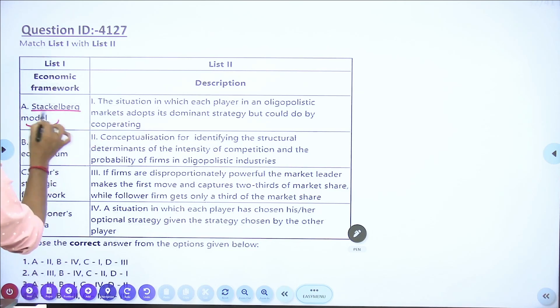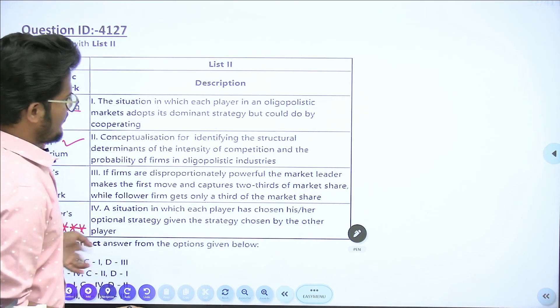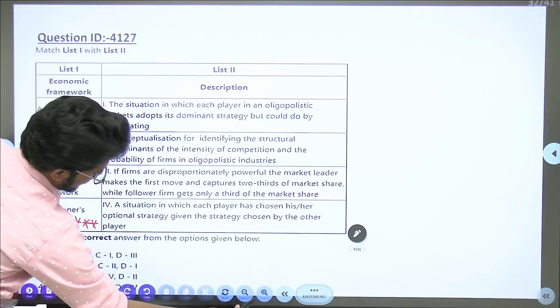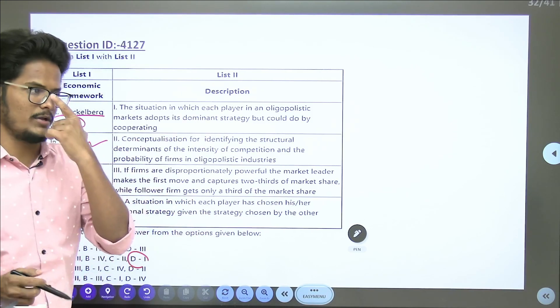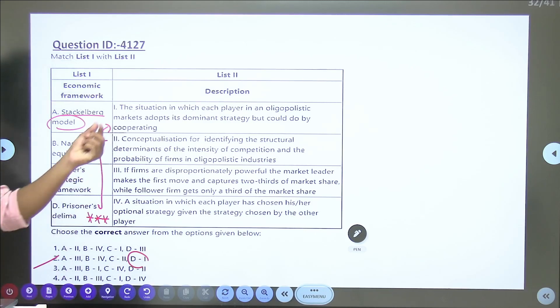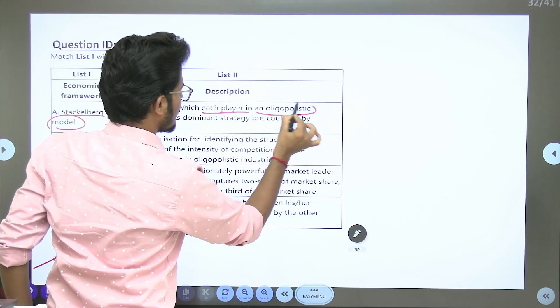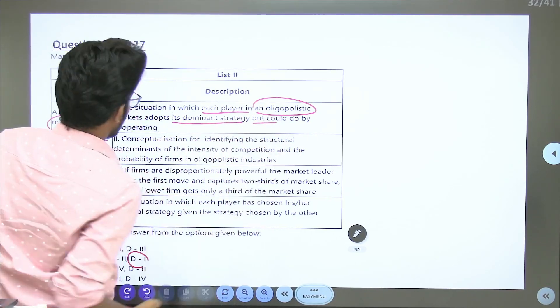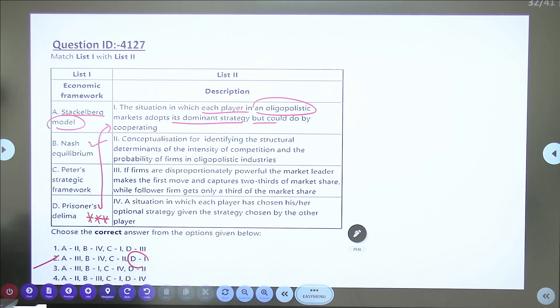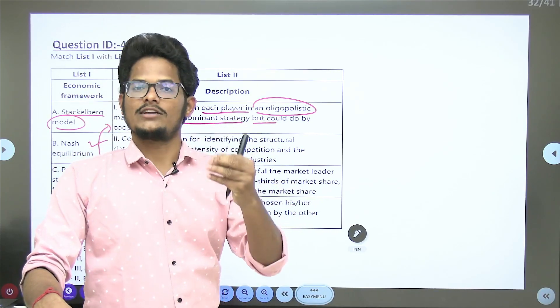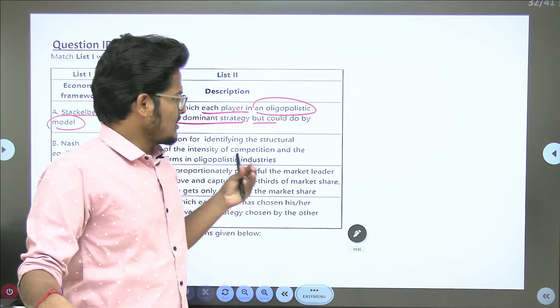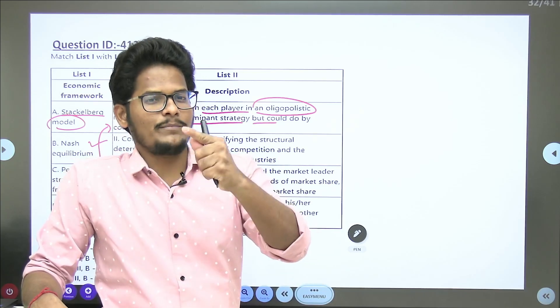Next, Stackelberg model, Nash Equilibrium, Porter's strategic framework, and Prisoner's dilemma. Option B is given answer, A3. Let's look at Prisoner's dilemma first. The situation in which each player in oligopoly market adopts a dominating strategy but could do by cooperating.